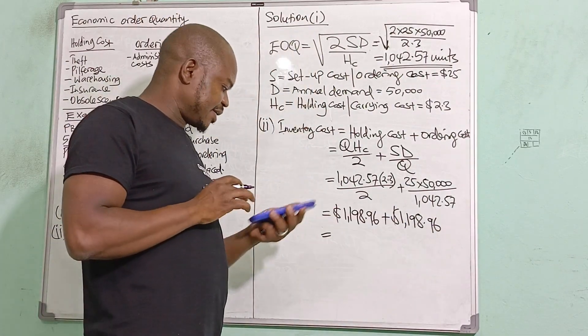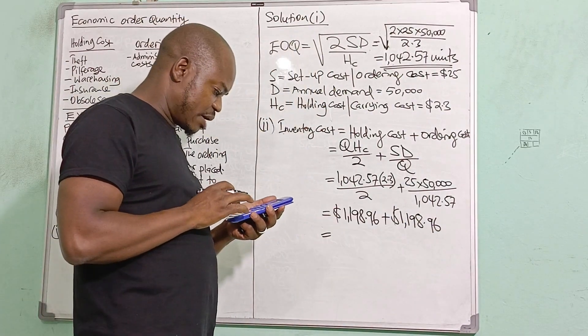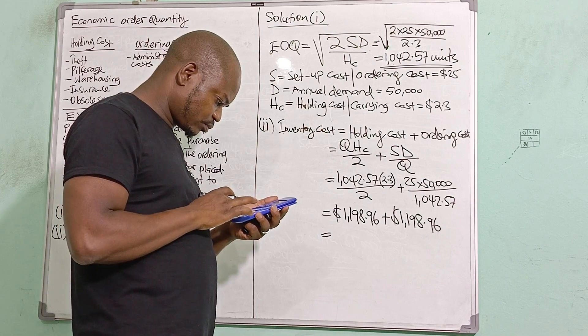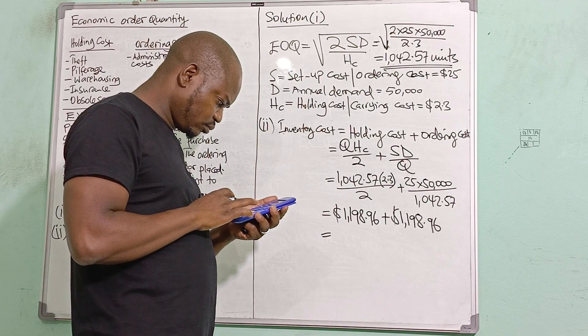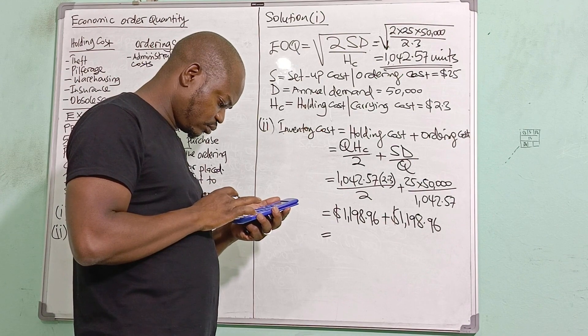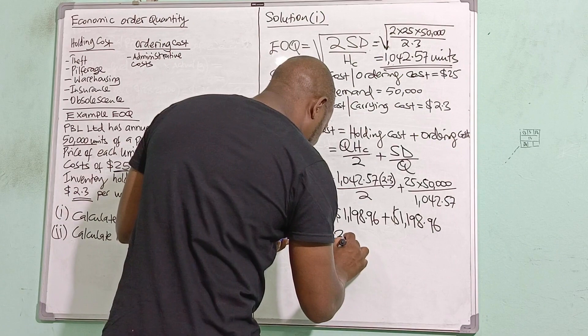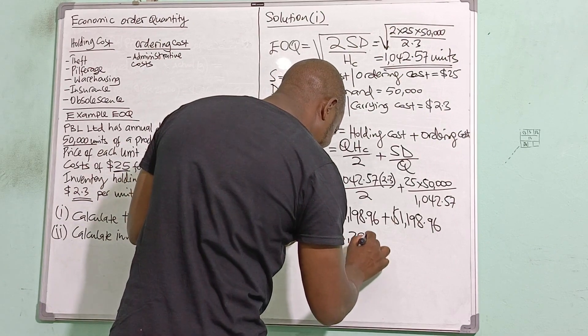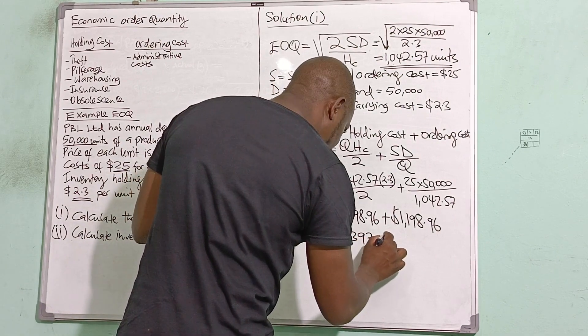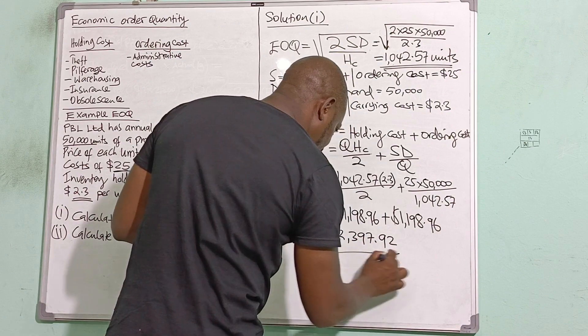25 multiplied by 50,000 divided by 1,042.57. Fantastic, the answers come out the same. This simply implies that I did the correct thing. So this plus that, that is the total inventory cost now. It gives me $2,397.92.